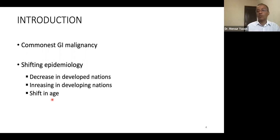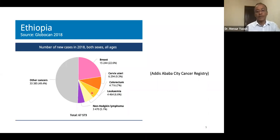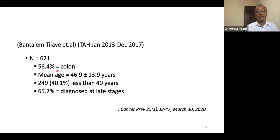The most important aspect of this shift is a change in age of presentation — from older to younger patients — commonly seen in developing countries. In Ethiopia, 2018 figures demonstrate colon cancer to be the third most common malignancy following breast and cervical cancer. Institutional studies from Tikur Anbessa by Bantallam July, analyzing 621 cancer registry cases, demonstrated 6.4% colon cancer with a mean age of 46.9 years.